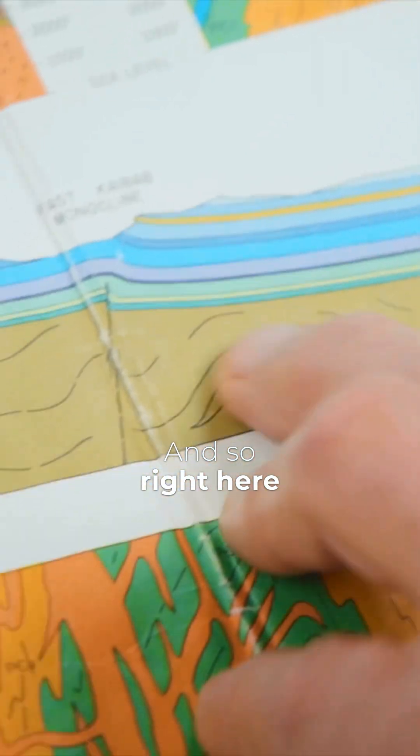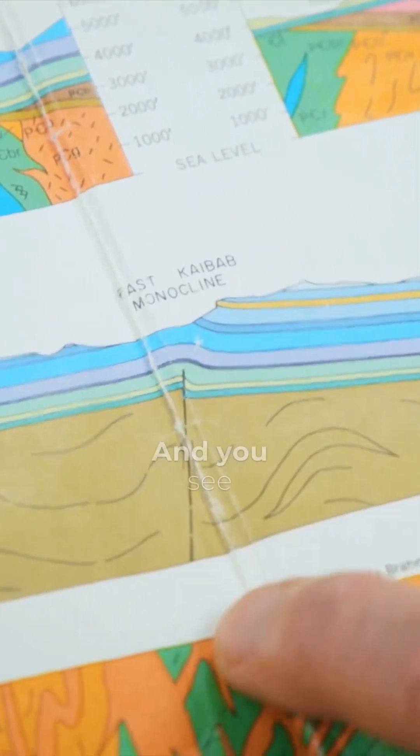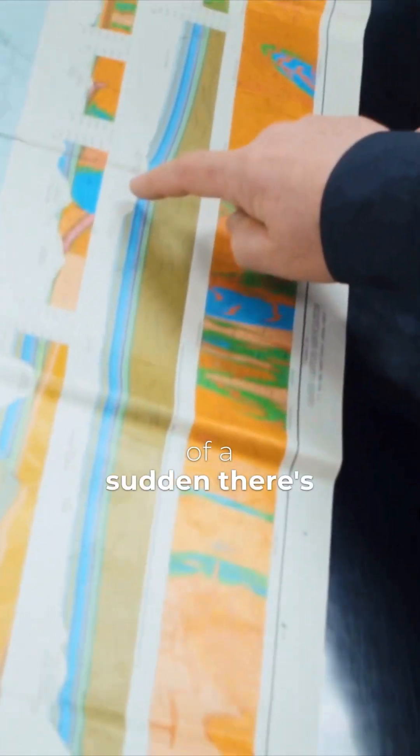And so right here is where the East Kaibab monocline goes through and you see how the rocks are nice and flat right here and then all of a sudden there's a bend.